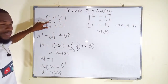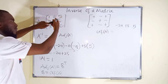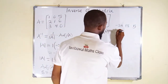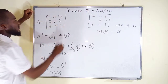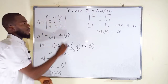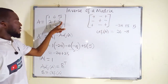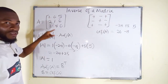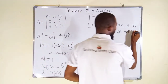Moving down to the second row. For the first entry: we close its row and column and are left with four entries. 0 times 0 is 0, minus 4 times 5 is 20. So 0 minus 20 is minus 20. The sign is negative, so it changes to positive 20. For the second entry: 1 times 0 is 0, minus 3 times 5 is 15. 0 minus 15 is minus 15. The sign is positive, so it remains minus 15. For the third entry: 1 times 4 is 4, minus 3 times 0 is 0. 4 minus 0 is 4. The sign is negative, so it becomes minus 4.